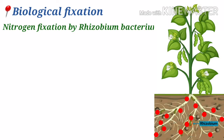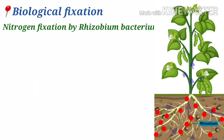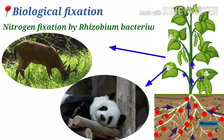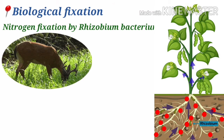Nitrogen fixation by Rhizobium: Rhizobium bacterium lives in the root nodules of leguminous plants such as grams, peas, soybean, and pulses. They have a symbiotic association with leguminous plants wherein they fix atmospheric nitrogen as ammonia, which is utilized by the plant. In return, the plant provides them with food and salts. The compounds of nitrogen are taken up by plants and utilized to prepare plant proteins.